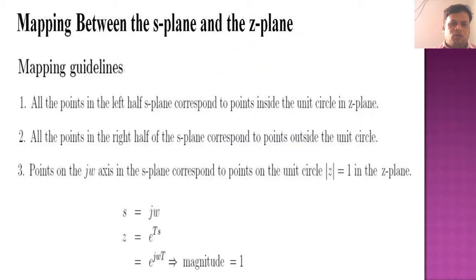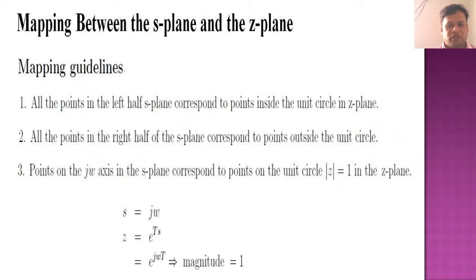First of all we should map the s-plane and the z-plane. The mapping guidelines are: all the points in the left half of the s-plane correspond to points inside the unit circle in the z-plane. All the points in the right half of the s-plane correspond to points outside the unit circle, and the points on the j-omega axis in the s-plane correspond to points on the unit circle, z equal to 1, in the z-plane.